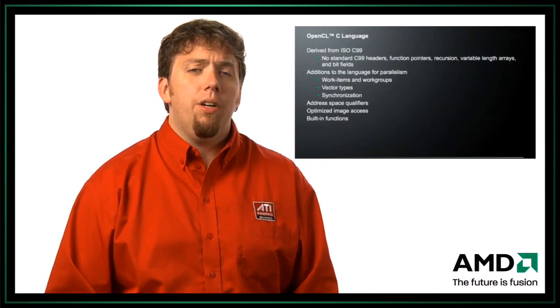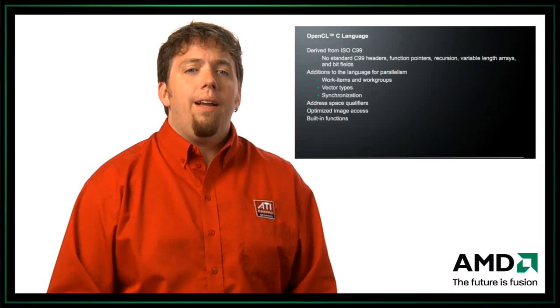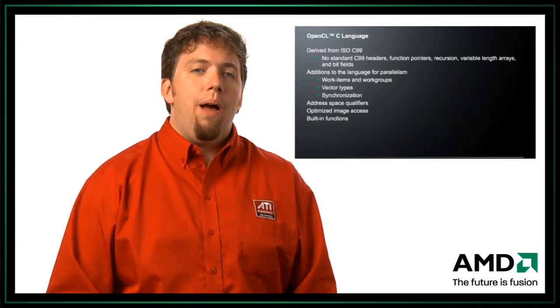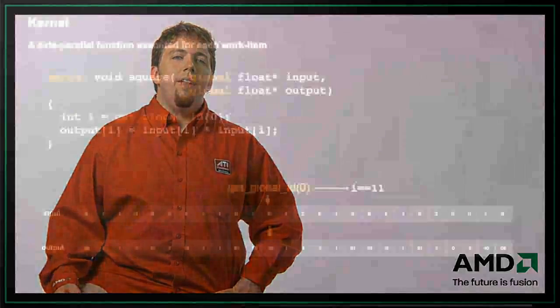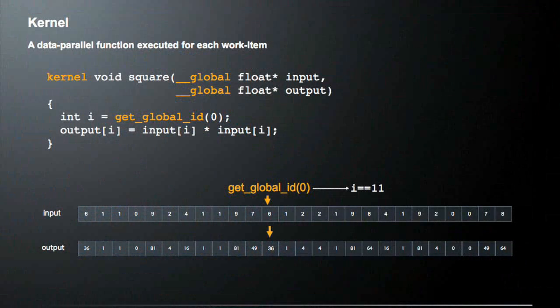There are also built-in functions for accessing data about the current runtime. Let's look at a kernel. This is a very simple data parallel kernel that's going to square a value — it reads a value from an array named input, multiplies it times itself, and writes it to the output array.